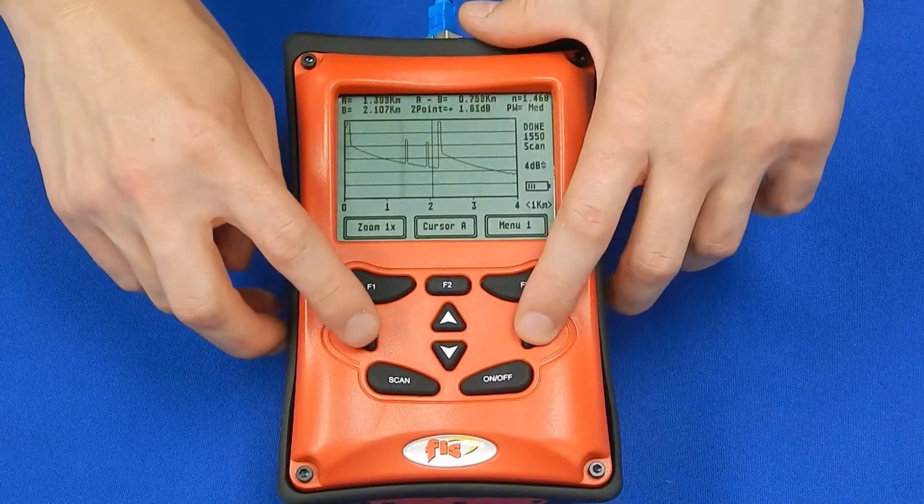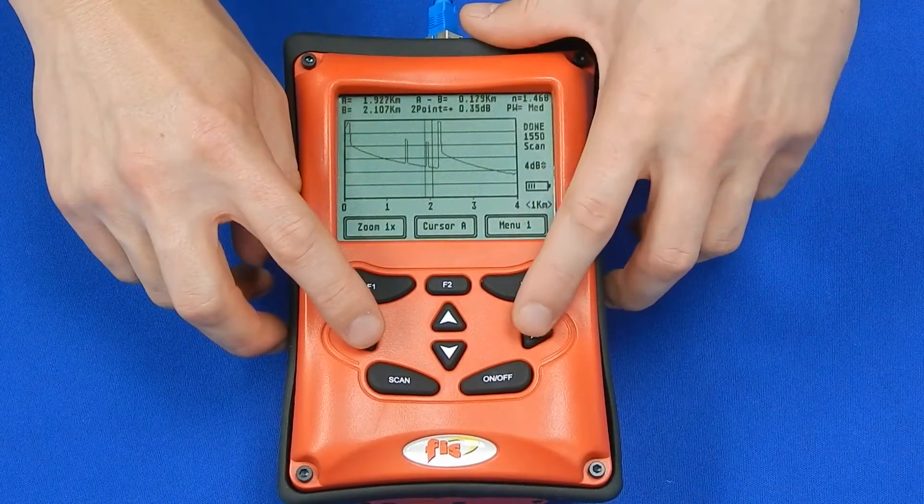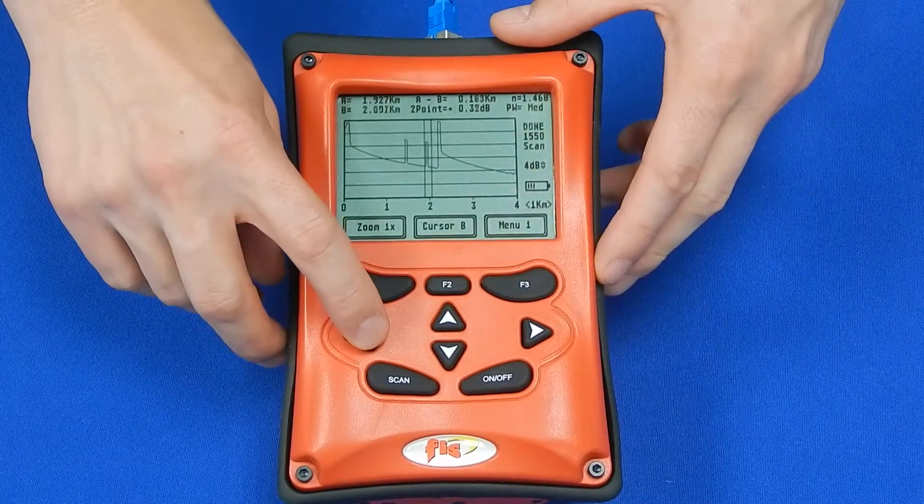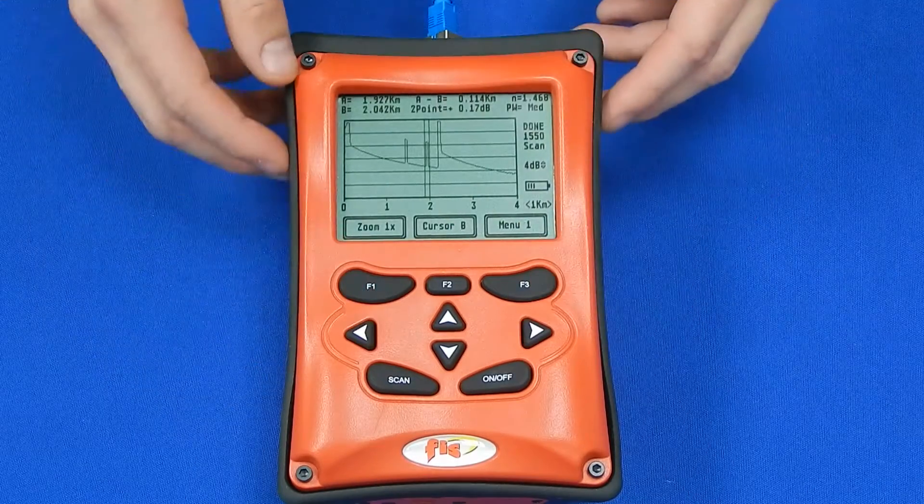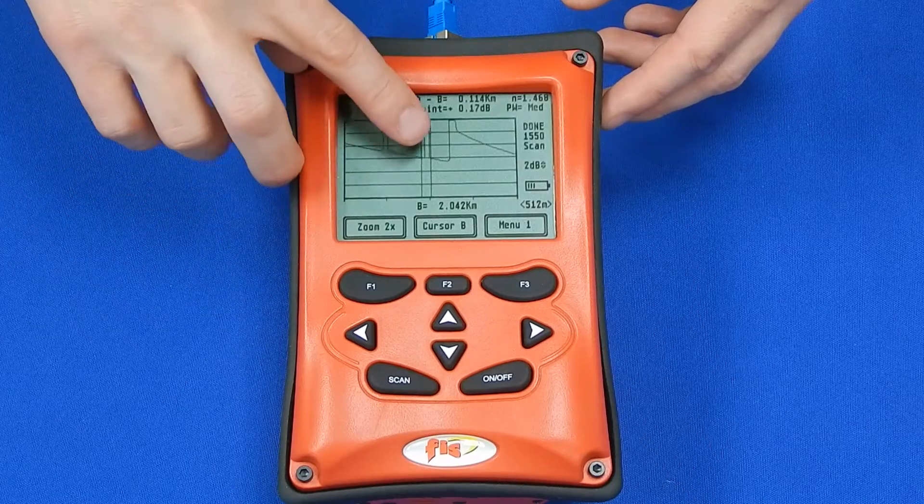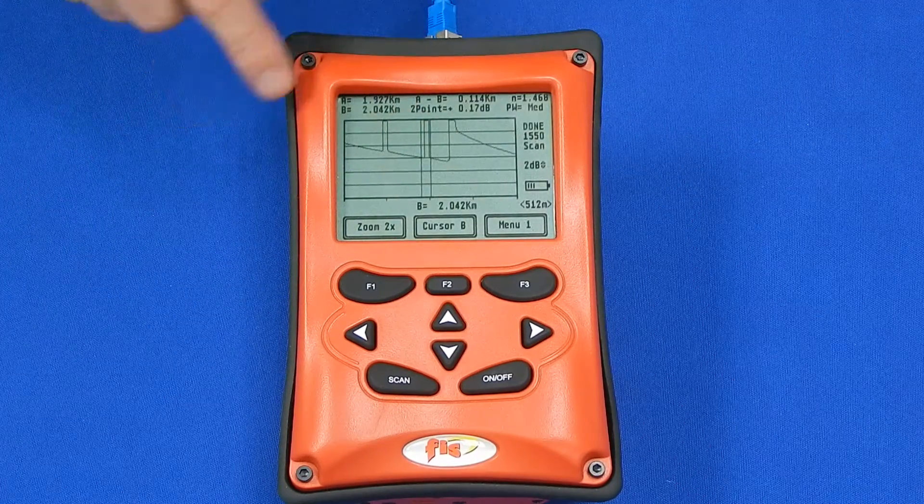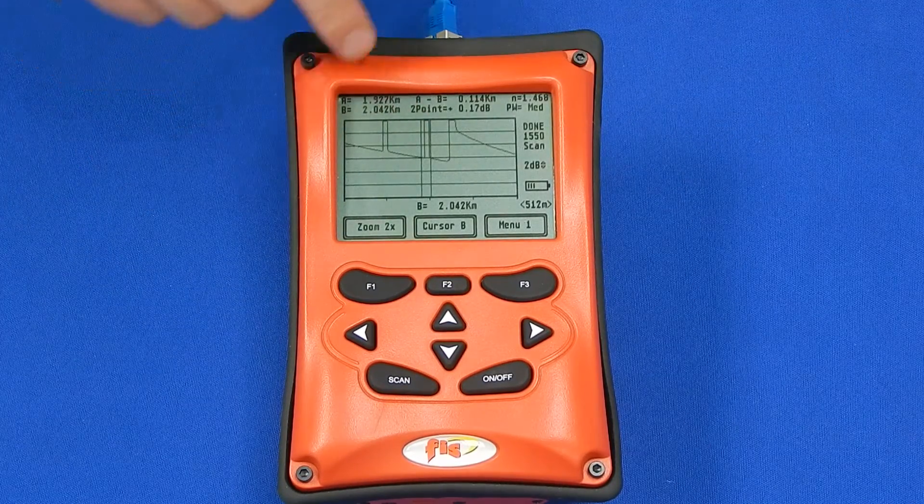You can now highlight sections or events on the trace by using the zoom and cursor buttons in menu one. The AB cursors will highlight distance and loss.